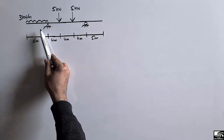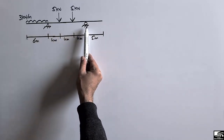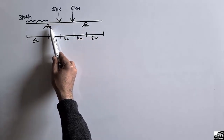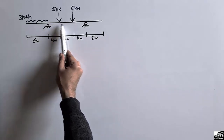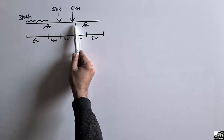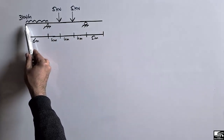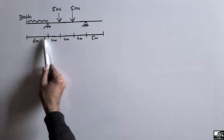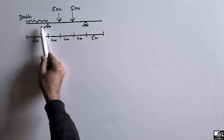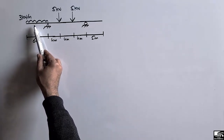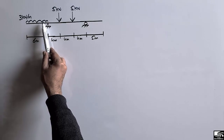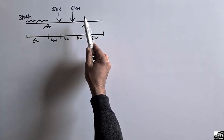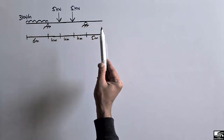This is the overhanging beam with different loads. There are two point loads of 5 kN acting on the simply supported span length, and there is a distributed load of 3 kN per meter over a distance of 6 meters. This distributed load is only at one hanging portion of the beam, while the other hanging portion has no load.